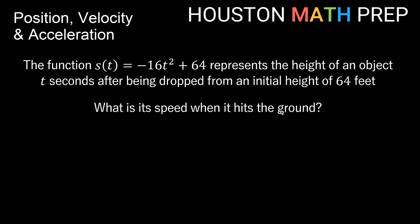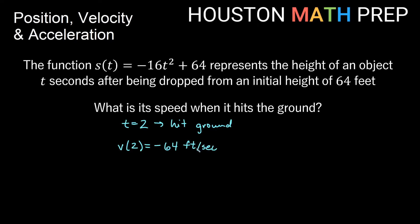Now we want the speed when it hits the ground. We already found that at t equals 2 — when it hits the ground — the velocity is negative 64 feet per second. Speed is the absolute value of velocity, so we take the absolute value of negative 64 feet per second. That gives us a speed of positive 64 feet per second.